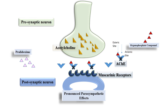Treatment of this is pralidoxime. Although the organophosphate compound occupies the esterotic site, the anionic site of the enzyme is still free. Pralidoxime binds with the anionic site of the enzyme. Pralidoxime then makes a bond with the organophosphate compound, and this entire complex dissociates from the enzyme, leaving behind the free and active enzyme.